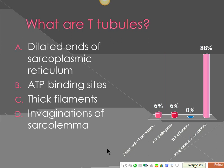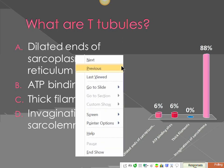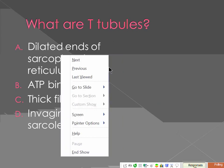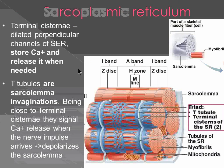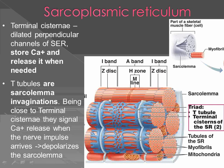T-tubules are invaginations of the sarcolemma. Another way to look at it: the T-tubule is like a tube, and it's arranged like a T. So this is the sarcolemma going in and forming that T shape. That's how you remember it — T-tubule.